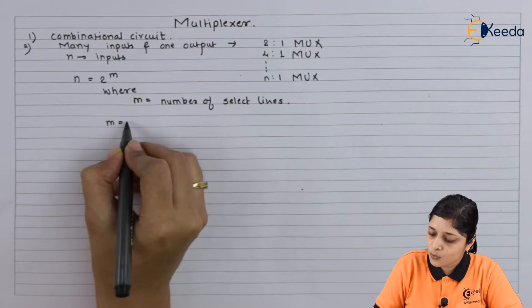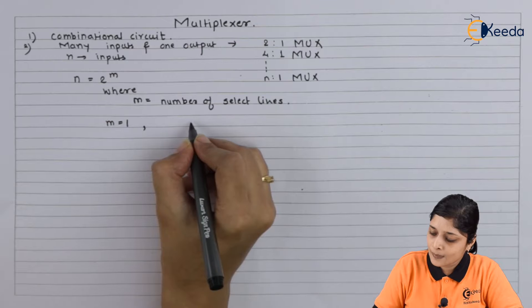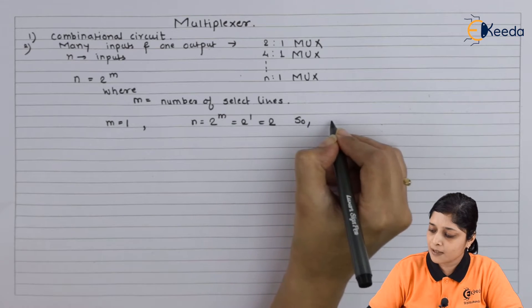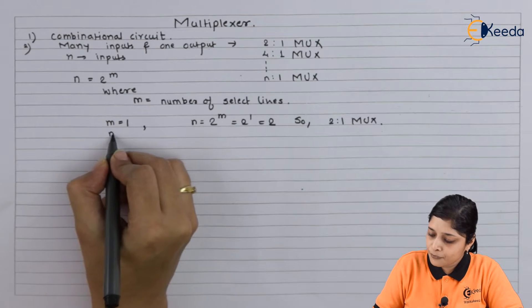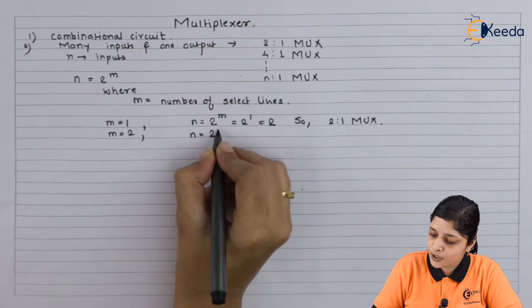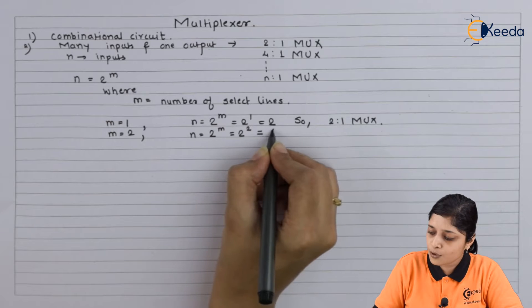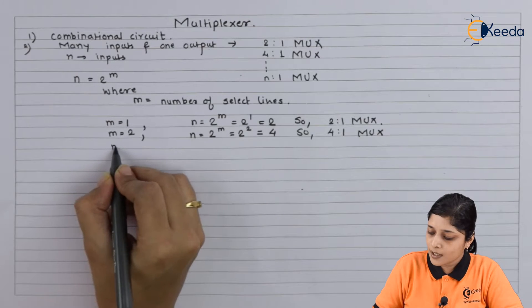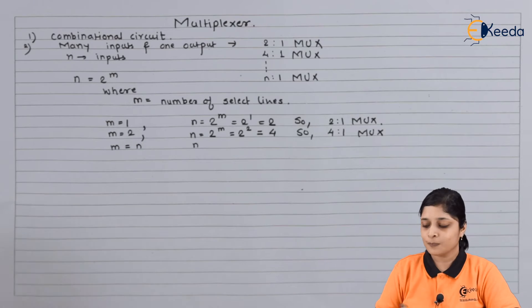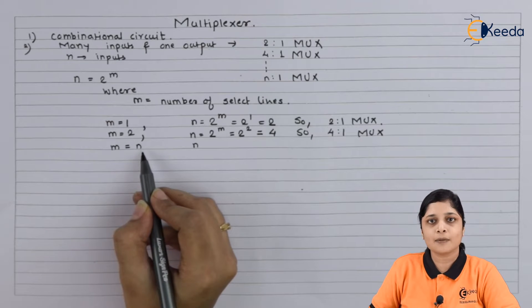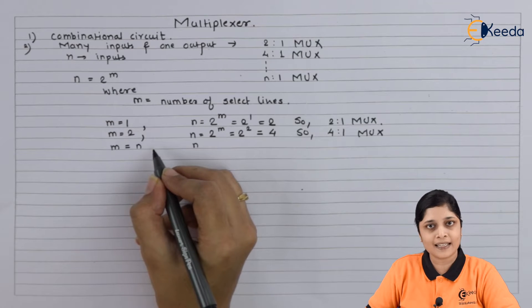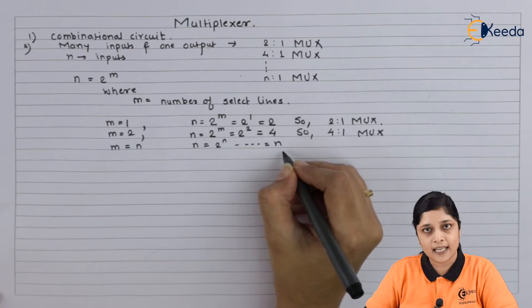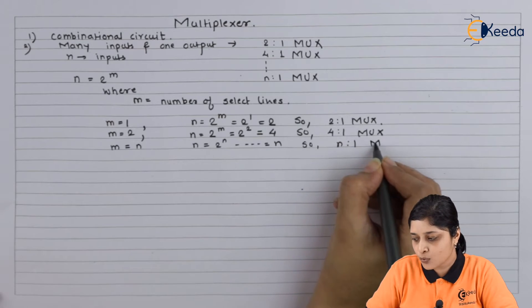Now if m equals to 1, we have n equals to 2 raised to the power m, means 2 raised to the power 1 is 2, so it becomes a 2:1 MUX. If m equals to 2, 2 raised to the power 2 is 4, so the MUX becomes 4:1 MUX. And here if m equals to n, where n is the number of inputs, again n equals to 2 raised to the power n, so the MUX will be n:1 MUX.